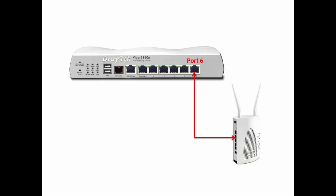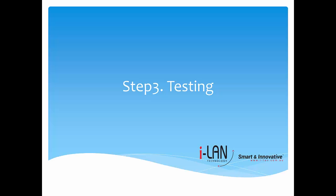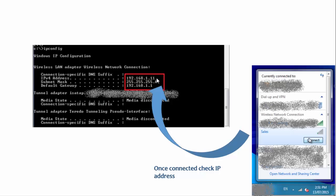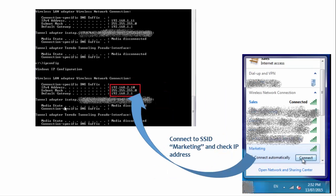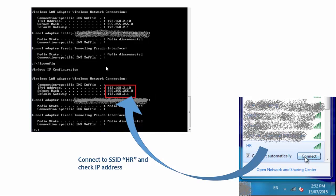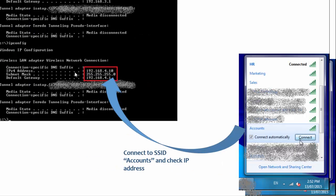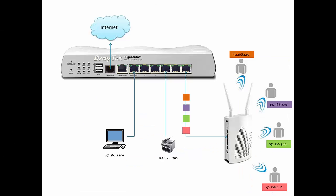Connect LAN port number 6 of the Vigor2860 to the AP900 through a network cable. Now we will test the setup. From a laptop, go to Wireless and try to connect to each SSID one by one and check the IP addresses. The wireless client gets an IP address according to the SSID it connects to. We will also verify the VLAN — a single physical connection between the router and AP can pass traffic for all VLANs. You can also enable interLAN routing under LAN General Setup to allow communication among the 4 VLANs.